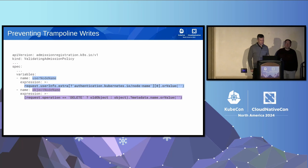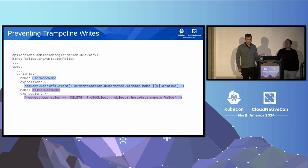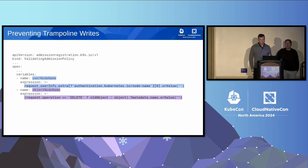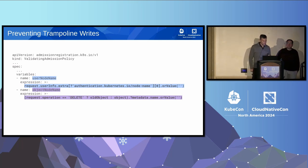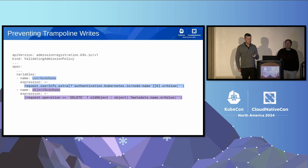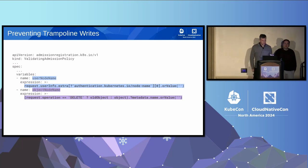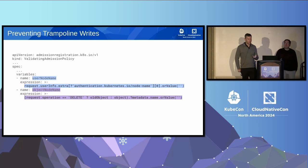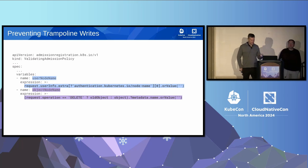Now we've limited the requests we're processing to just the ones we care about. We create two variables using CEL. The first is the user node name — it accesses the node information we already verified earlier. If the node name is not present, that means somebody is using the service account from outside of a node, so we default this to an empty string and check it later. The second variable is the object's node name, gathered from the requested object — the widget being created, updated, or deleted. In the case of a delete, we get the name from the old object. If the user tries something like a delete collection, this wouldn't match and we'd end up with an empty string — deliberately handled, though it's subtle.